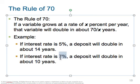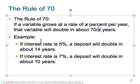If the interest rate is 7%, a deposit will double in about 10 years. So a 2% jump means your deposits double four years quicker. This compounding thing is a pretty big deal.